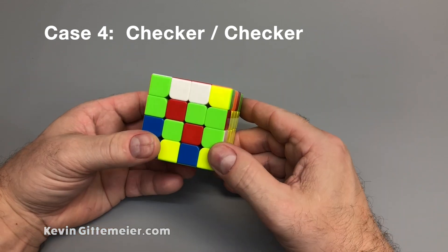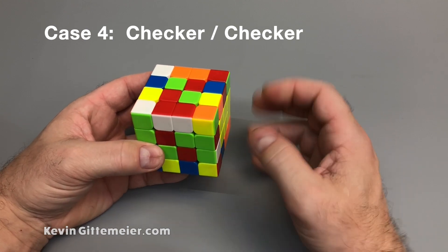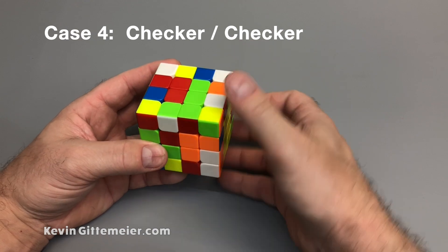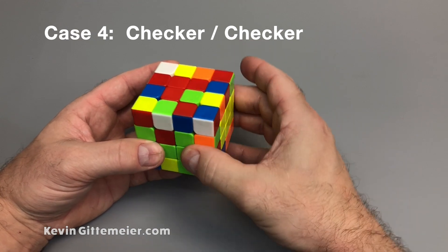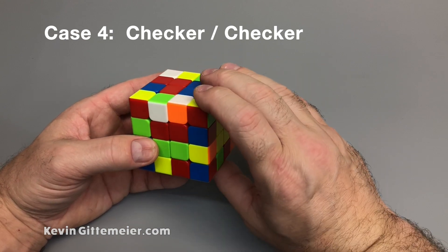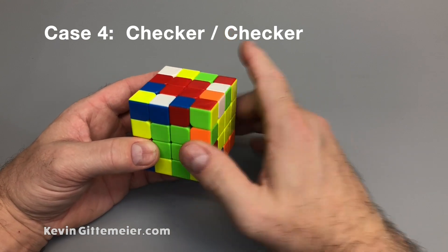Now let's do that exact same sequence, but perform differently. Slice up to match these pairs. Come down, but instead of stopping right here, keep coming down to match those up. Turn the front to position the red to come back up.